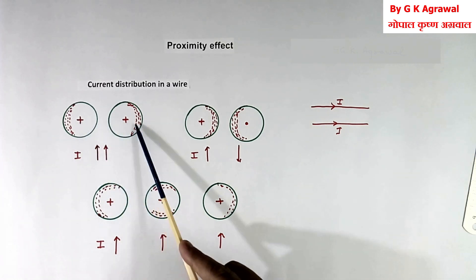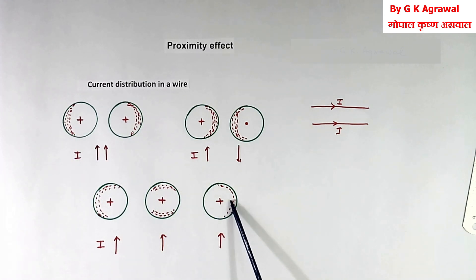Then like here, current will move away from each other. So in this wire and this wire, current will flow here and here.